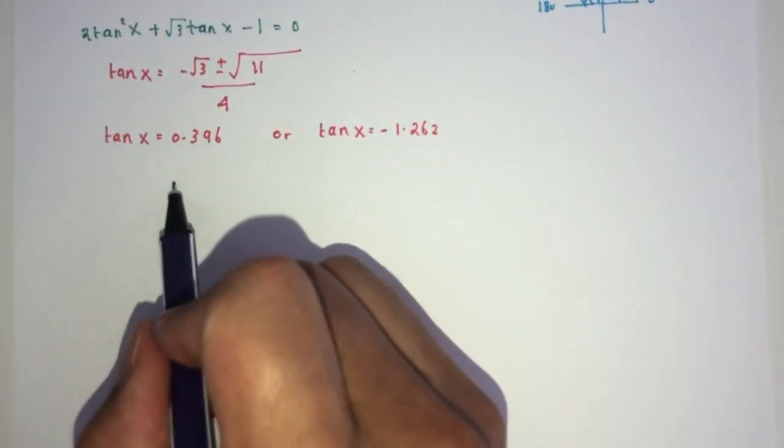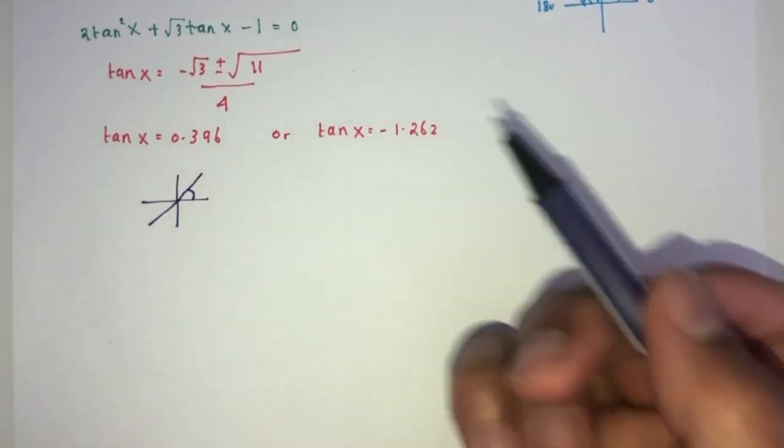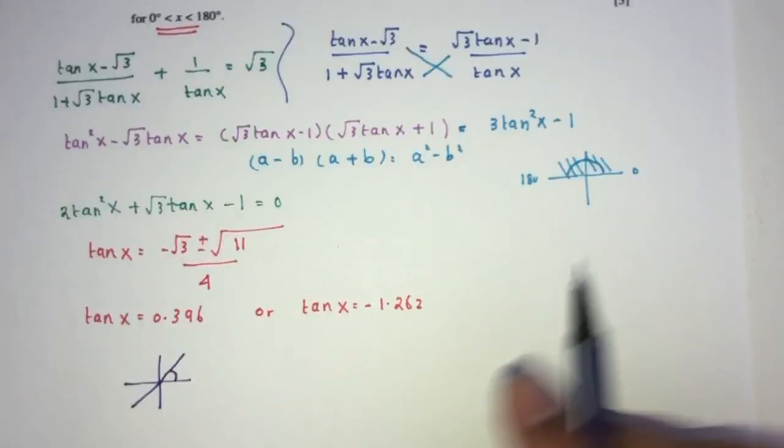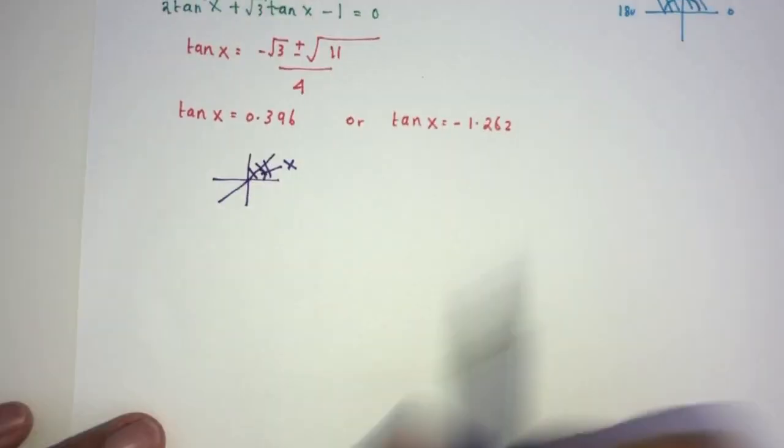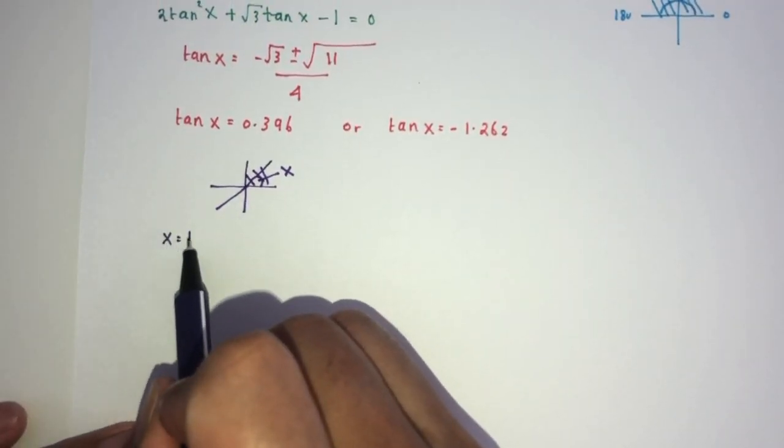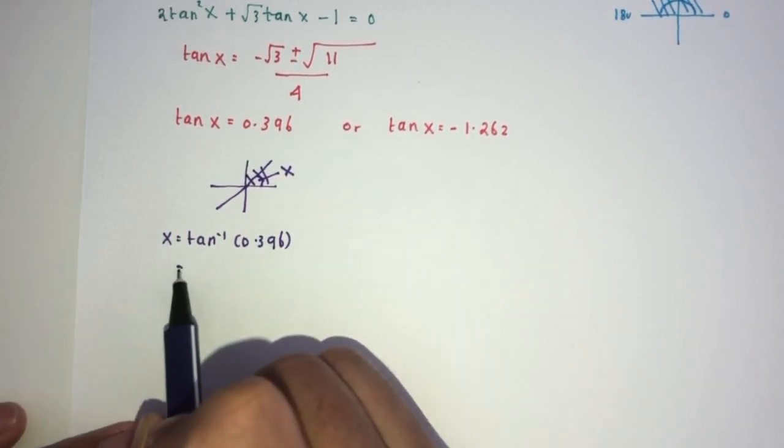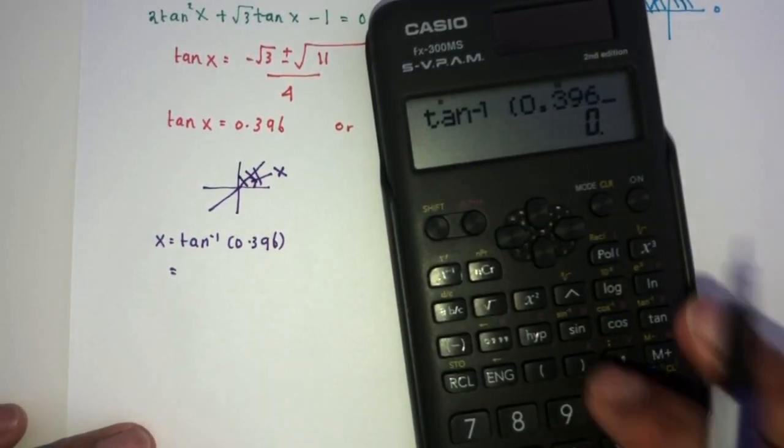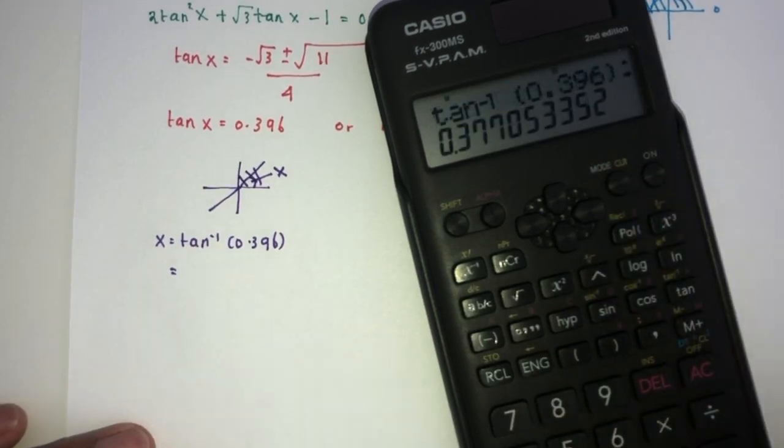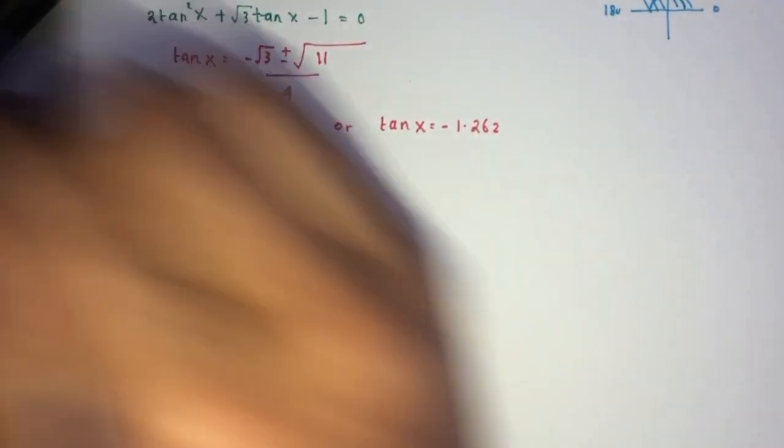Two possible values for that. Now for the first one, let's look at this one, positive value. You will have x will be in the first quadrant and in the third quadrant. There's no need to find this one because we only care about these two. So that will be only this one will be your x. So x will be simply tan inverse of the value over here. Tan inverse of 0.396, we have to use degrees here, that will be 21.6 degrees.